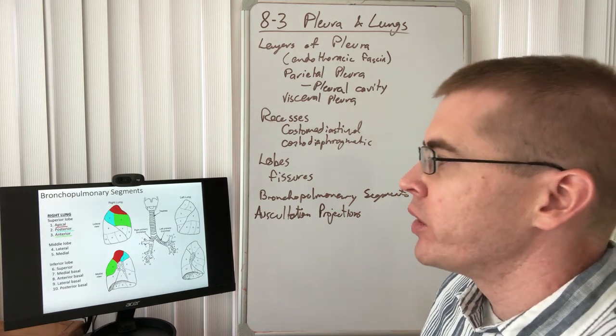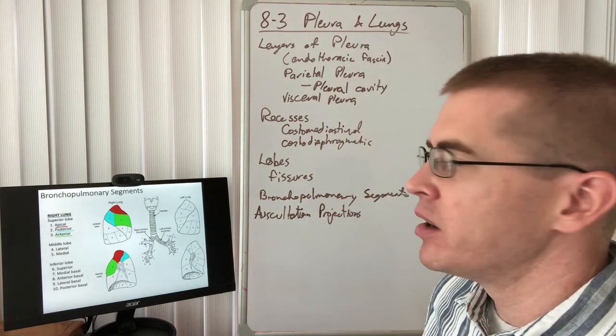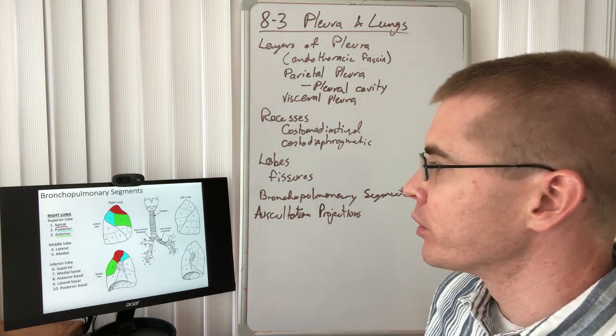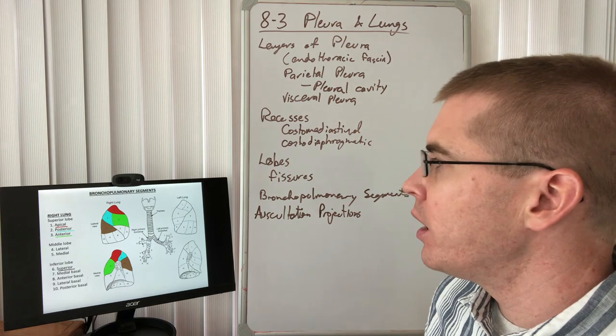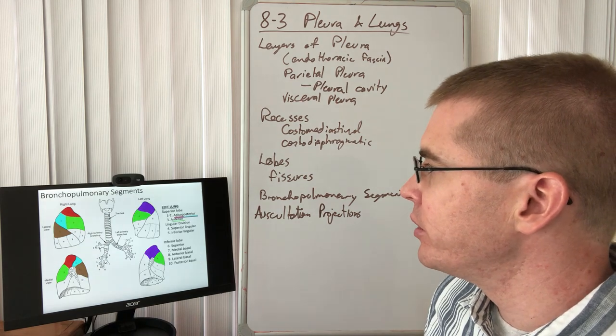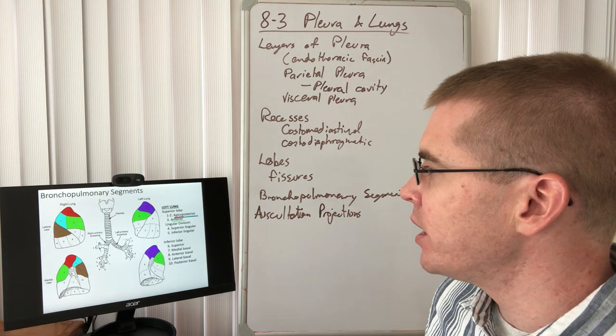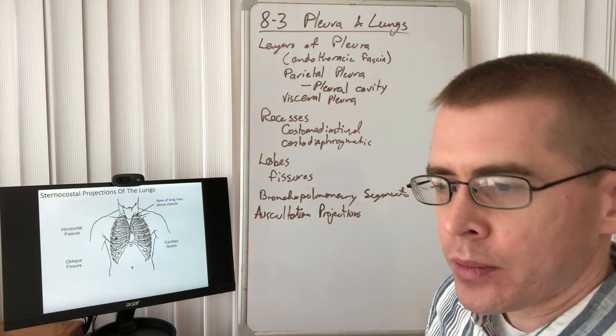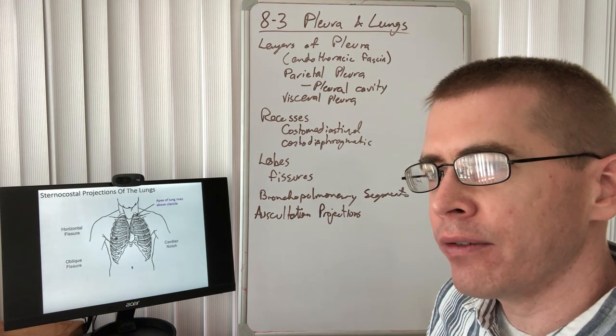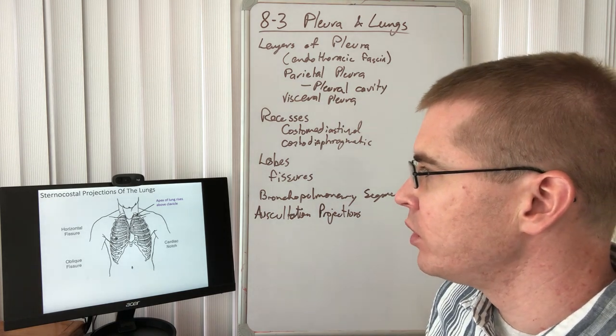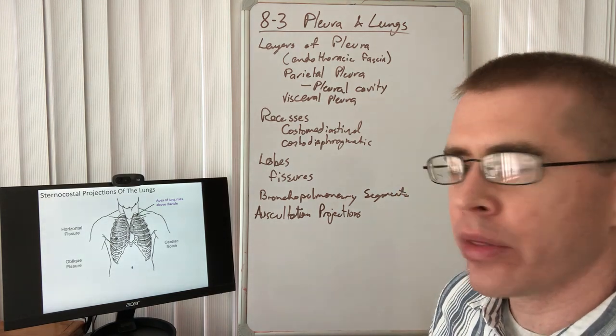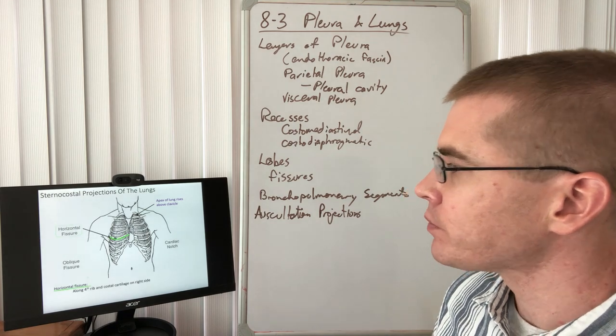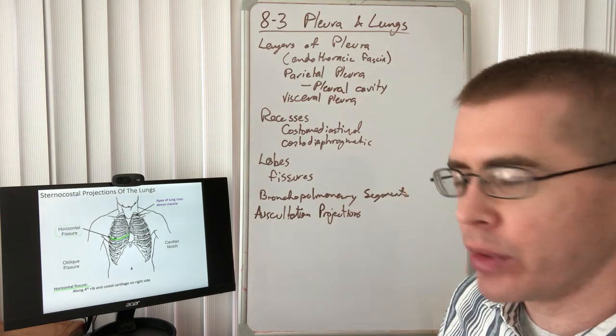Here, just quickly going through these, these are names, these are numbered, they're correlated here for your viewing pleasure. But let's go to the projections of these lobes of the lung onto the thoracic wall. Of course, we have these fissures that we've talked about.